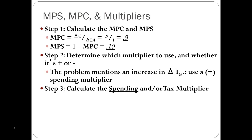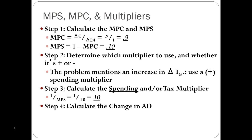We now know we're using the spending multiplier because we see a change in gross private investment. Our spending multiplier is 1 over MPS, so it's 1 over 0.10. We already figured out that our MPS is 0.10. 1 over 0.10 equals 10, so our multiplier is 10.